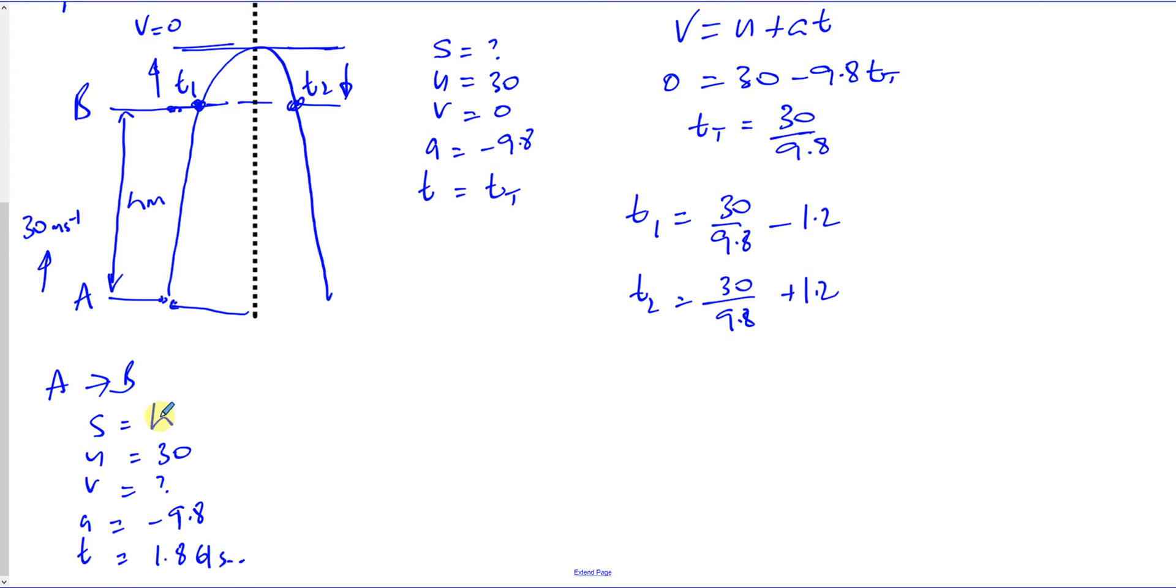And then I can use SUVAT. We need to find S equals UT plus half AT squared. So we can say S is what we're trying to find, H. U is 30, T is 1.861. We're going to have half times A, so it's half times minus 9.8, which is minus 4.9. Times 1.861 squared. So that will give us the height.